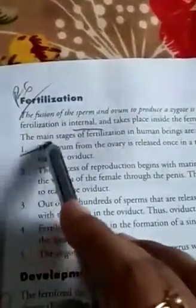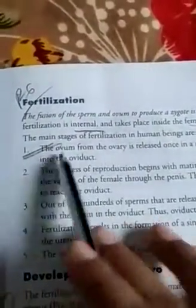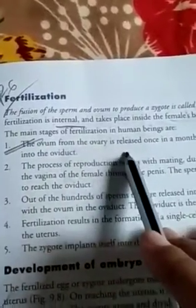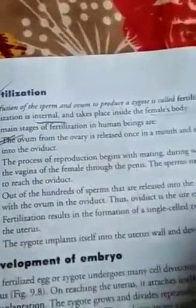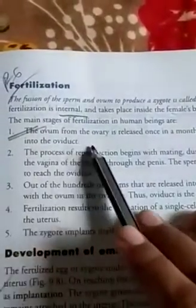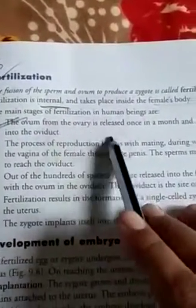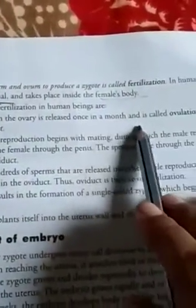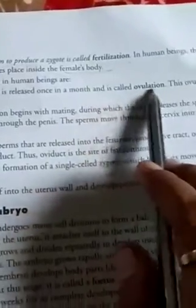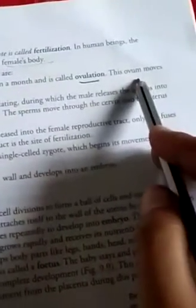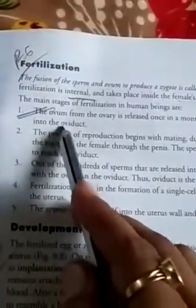First, the ovum from the ovary is released once in a month, and this process is called ovulation. This ovum then moves into the oviduct.